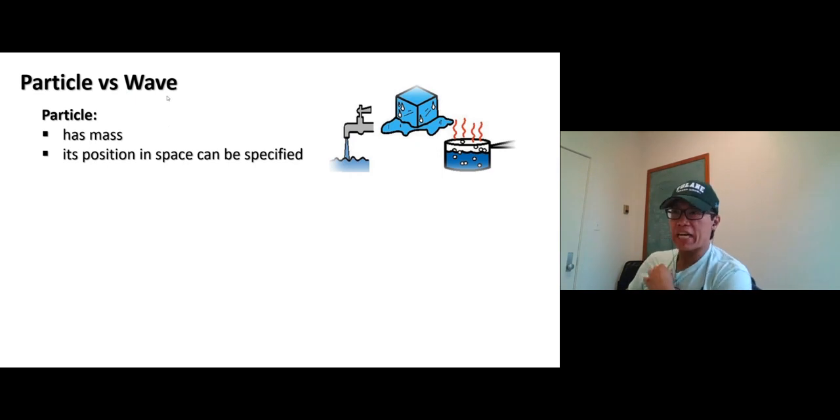Particle versus wave. What is particle? What is wave? Let's talk about it. Particle - anything that has mass and has volume, matter. We learned all this before. So particle has mass and its position in space can be specified. So you know what it is?